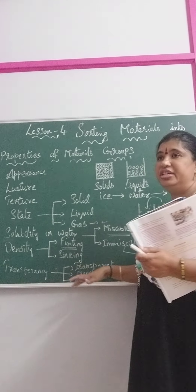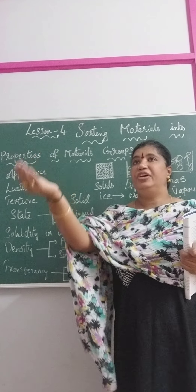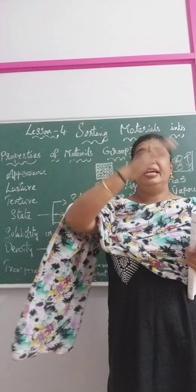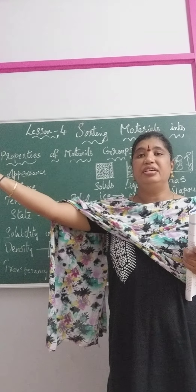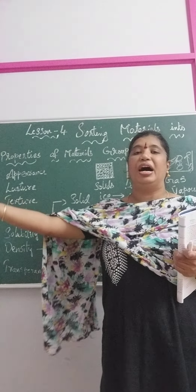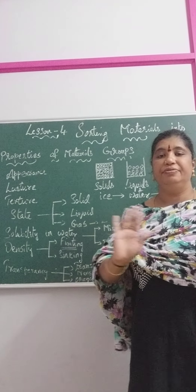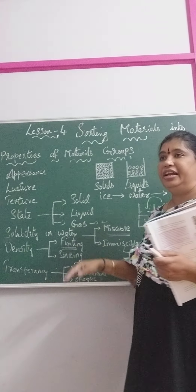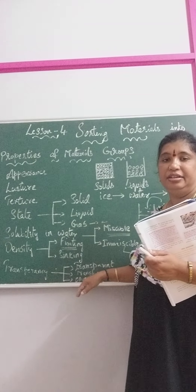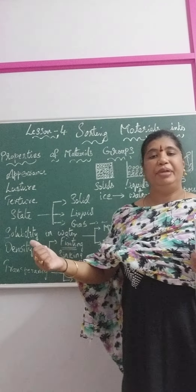An example for opaque objects: suppose if I switch on the light in this room, and this room is covered with walls or wooden cardboard sheets. If I go outside, can I see the light which is present inside this room on the other side? No, because the wall will not allow the light to pass through it. So the wall becomes an opaque object. If a material allows only a little light, it is called translucent. If the light is allowed completely through the material, it is called transparent.